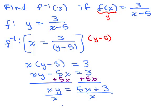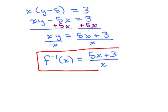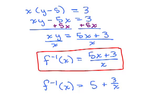Writing that in function notation: f inverse of x equals 5x plus 3 over x. Keep in mind someone else might simplify the numerator by dividing each term by x, giving 5 plus 3 over x — that's another valid way of writing f inverse of x. You just need to check using algebra if your form differs from someone else's.